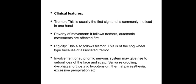Let us go to the clinical features of the disease. The onset is gradual, usually affecting the age between 50 to 60 years. Males are slightly more affected. The classical triad is: first, tremor; second, akinesia or poverty of movement; and third, rigidity.